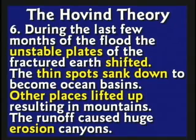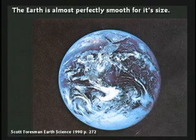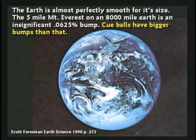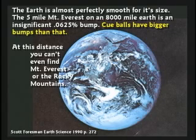The runoff would cause huge canyons in a hurry. The earth today is almost perfectly smooth for its size. The biggest mountain we know of is Mount Everest, 5 miles tall — on an 8,000-mile earth, that's 0.0625%. Cue balls have bumps bigger than that. If you shrank the earth down to the size of a cue ball, it would be smoother and rounder than the cue ball. Even though the earth has these giant mountains, they're insignificant compared to the size of the earth — you can't even find Mount Everest or the Rocky Mountains from that distance.